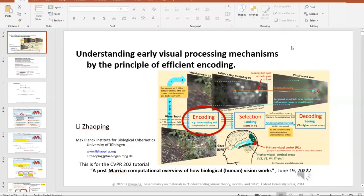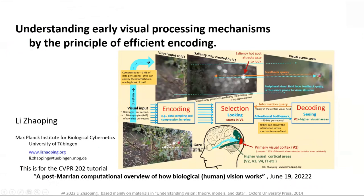We're going to start with a post-Marian computational overview of how biological systems work. We just did a marathon cramming our brains with lots of facts. If we can cram in a lot of facts, we can forget them just as quickly. Can we retain some of it through comprehension into a particular framework? This is the framework: we need to understand the brain through a new framework which focuses on selection.